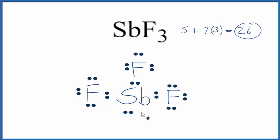We still have 2 valence electrons. We add these here. We've used 26 valence electrons, and now we have an octet here for the antimony. So this is the Lewis structure for SbF3.